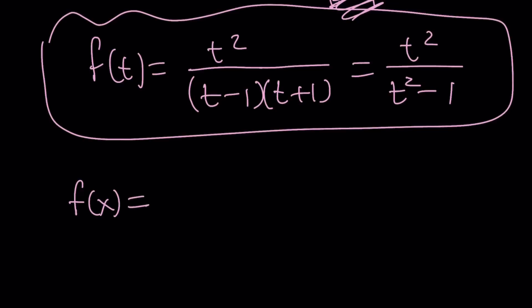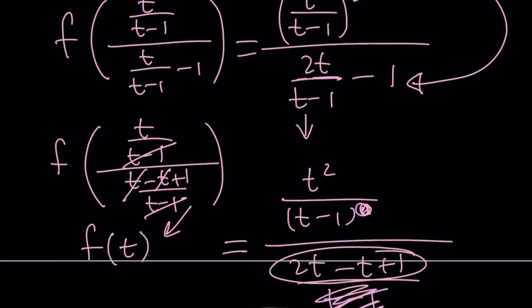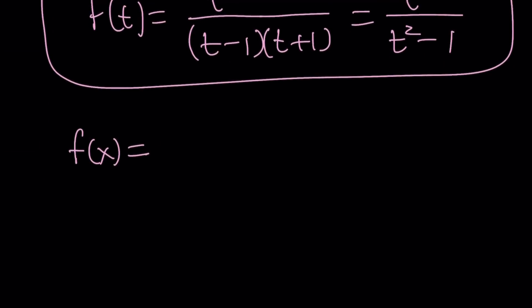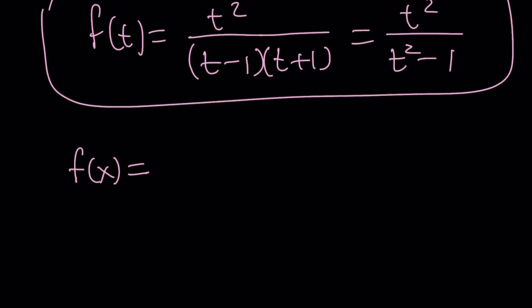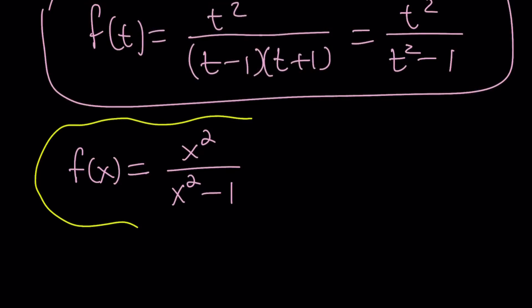You can constantly change the variable. Obviously, this x is not the same x that we had before. They have different meanings. Because, these variables can be, you know, dumped and reused again. So, f of x can be expressed as x squared over x squared minus 1. And, that's basically going to be the answer we're looking for. Alright? So, this is the end of the first method.